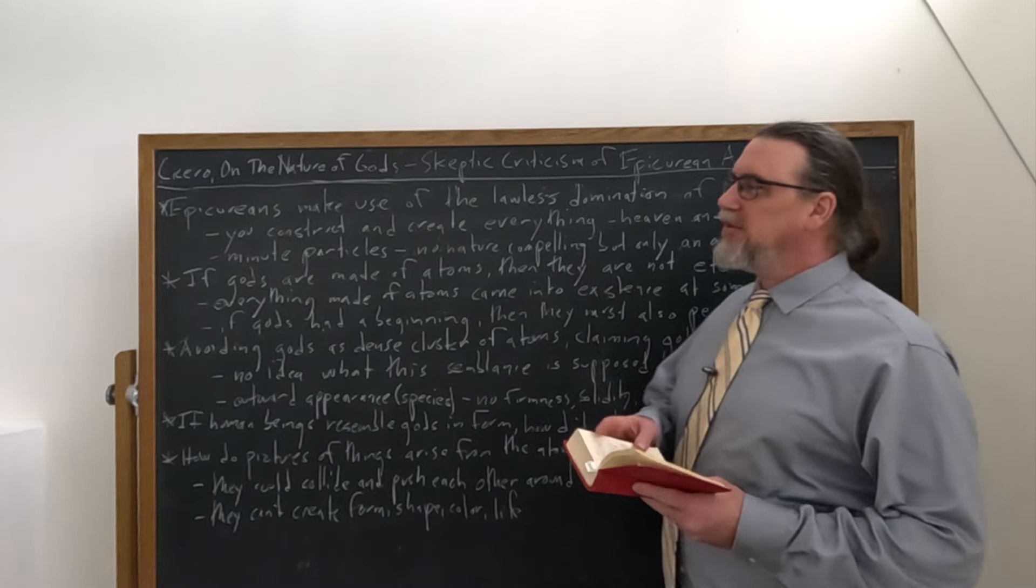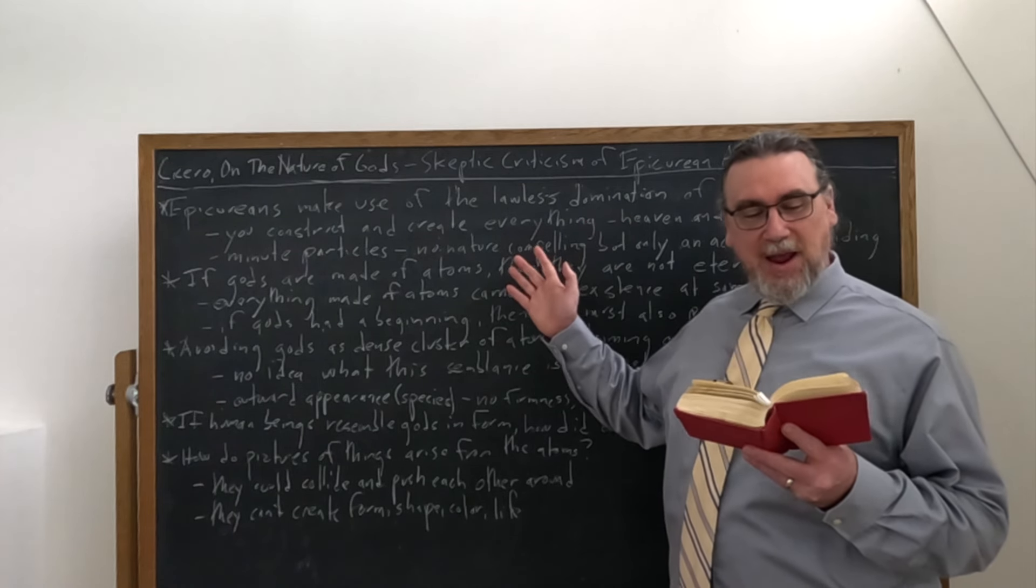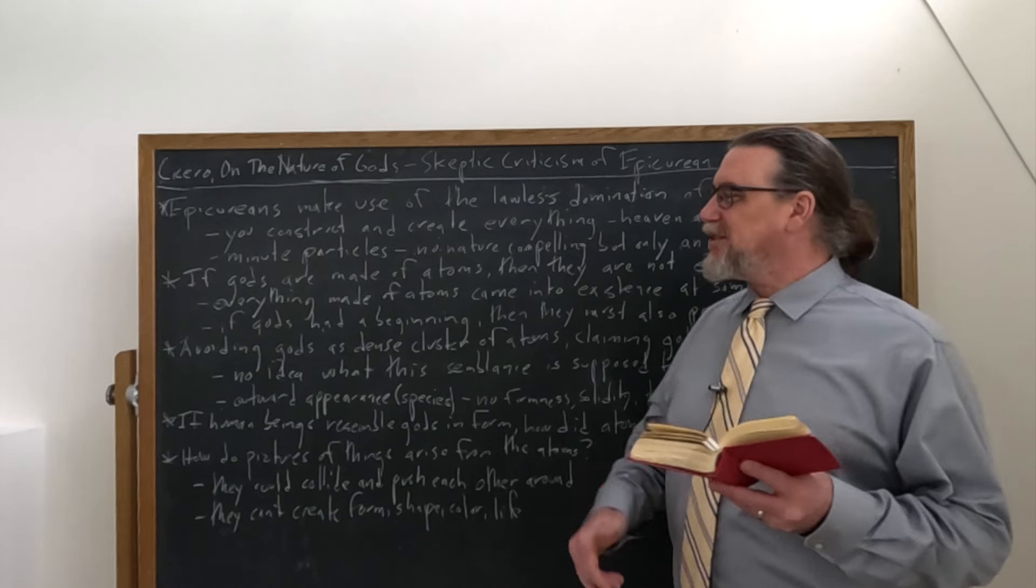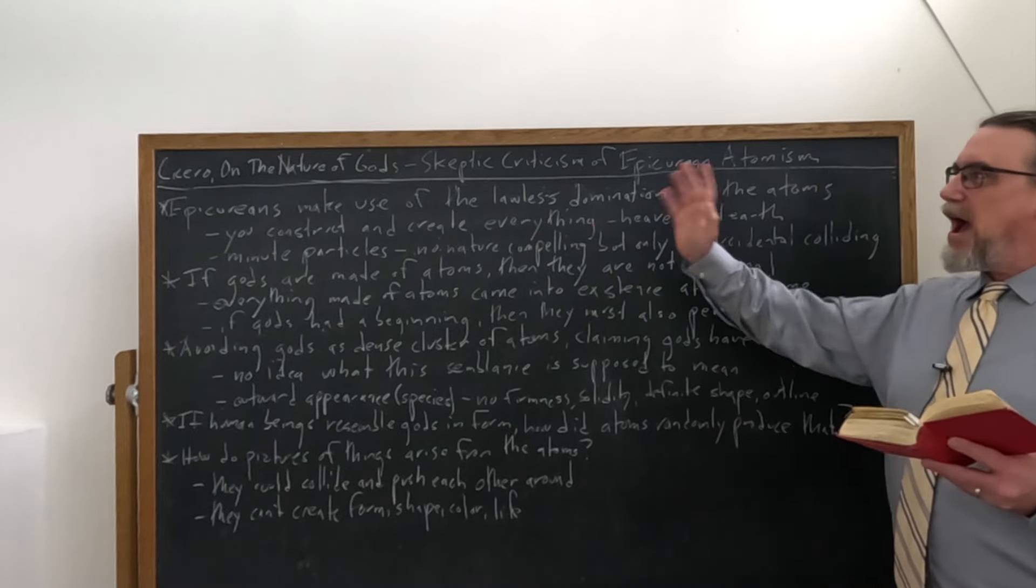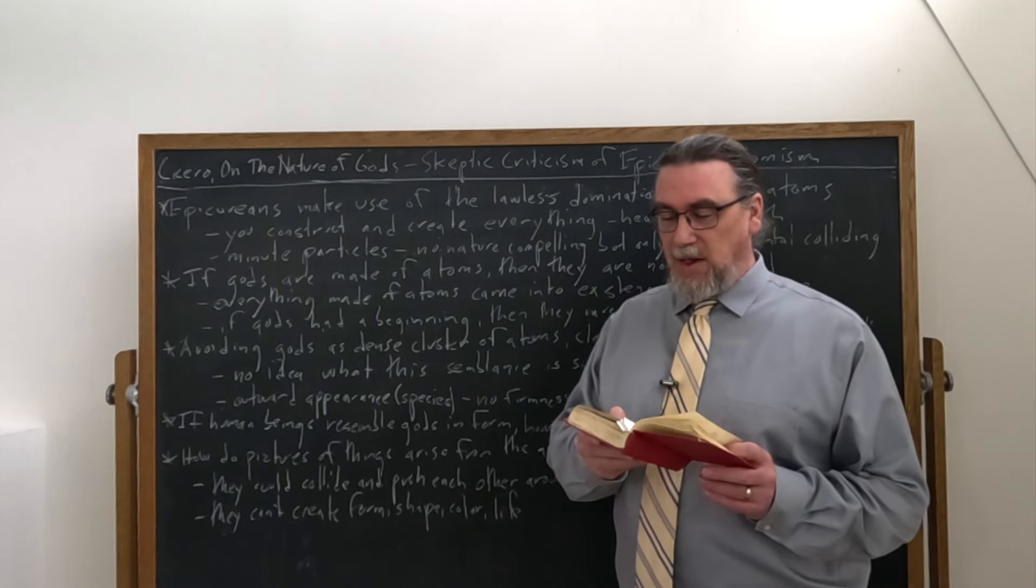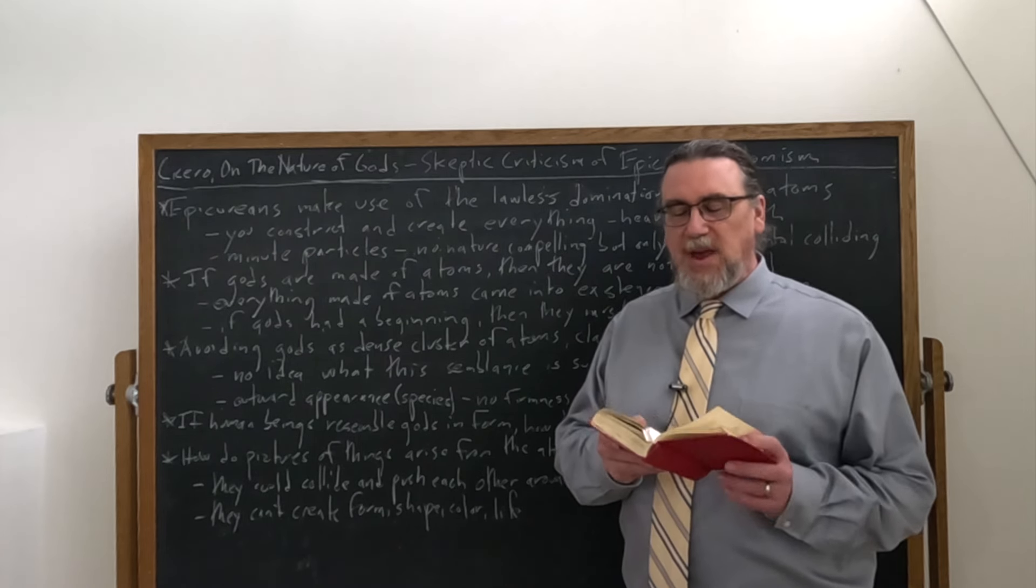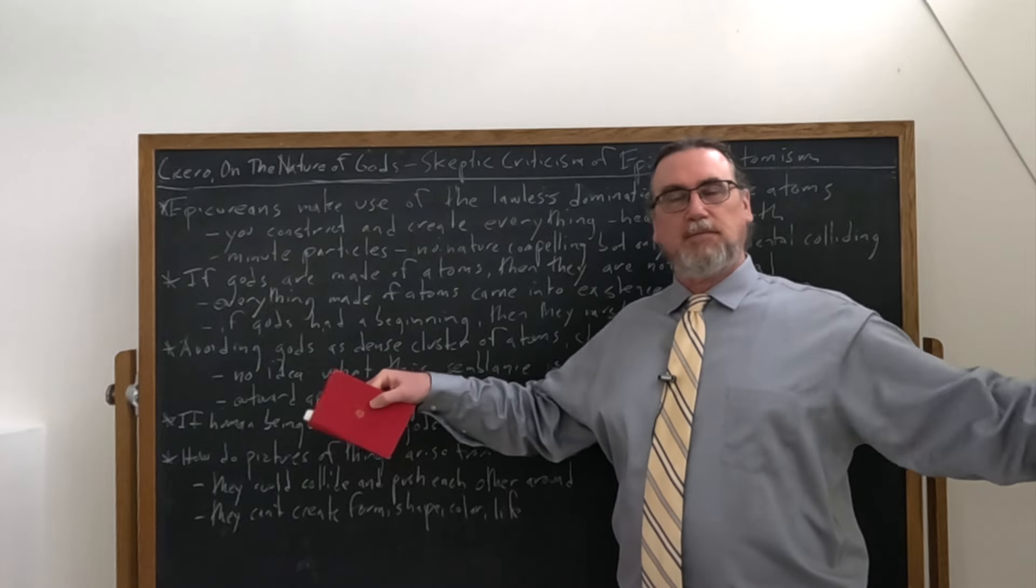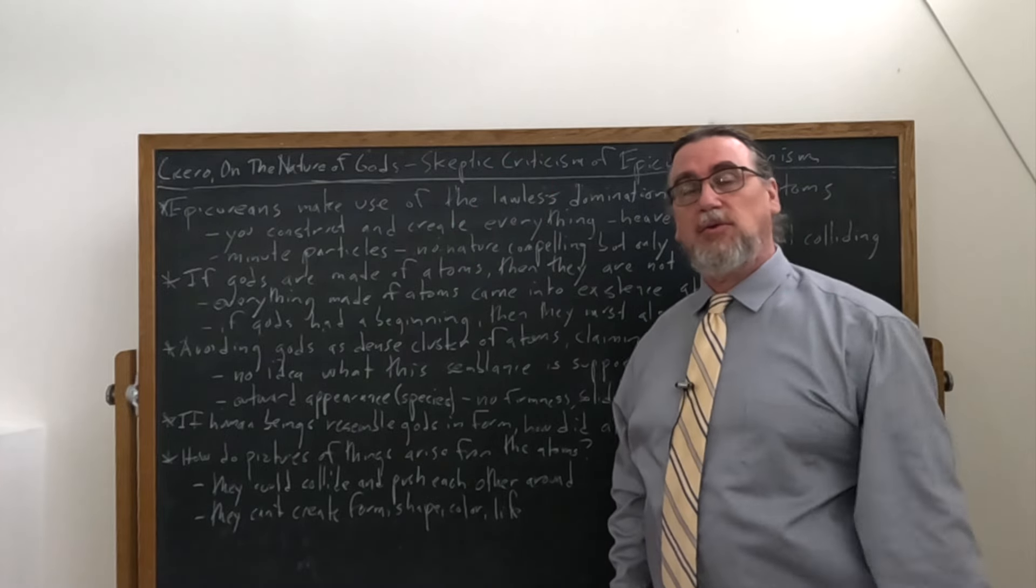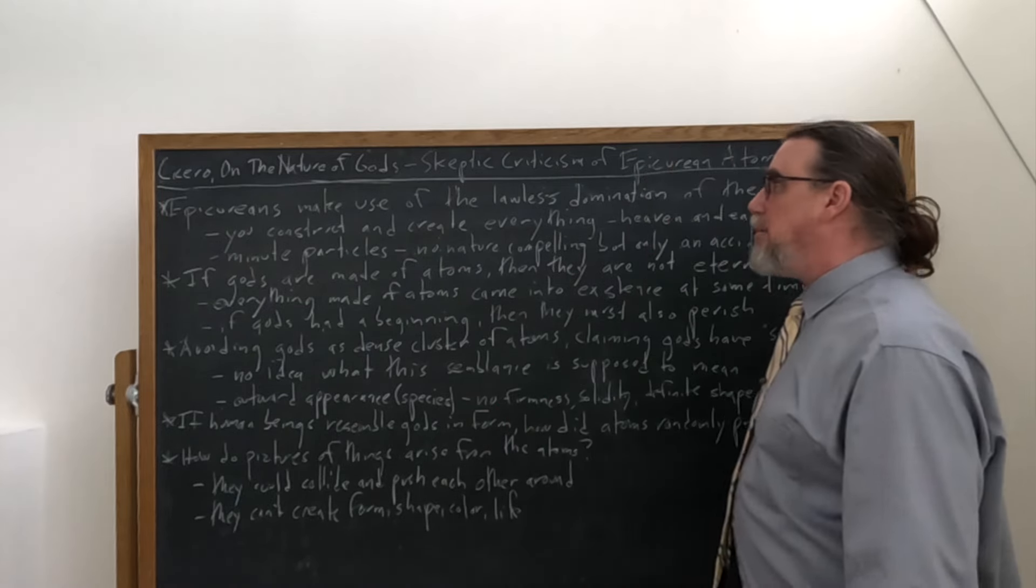And so he tells everybody, you construct and you create - the terms there are ethingis atque efficis - you cause everything out of the atom. So that would include God, but also includes, as he's going to say a little bit later, heaven and earth were created from these. Heaven and earth, meaning what we see in front of us here and the heavens where the gods are presumed to exist. Even if there's other earths, other worlds, they're all made up of the same thing.